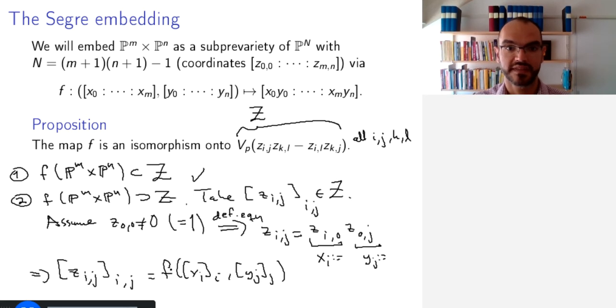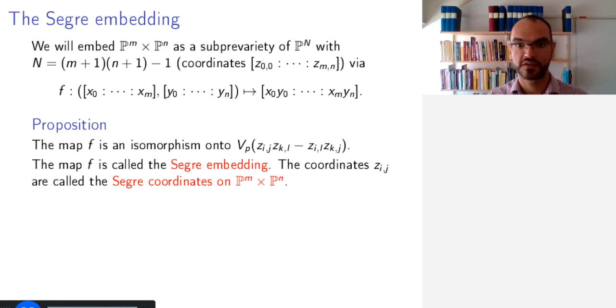And notice that the requirement that Z_00 is not zero means that neither X_0 nor Y_0 will be zero. And so therefore this is actually a point in the pair of projective spaces here. So this belongs to the image of F. And the fact that this is a morphism can be checked coordinate-wise because everything is polynomial.